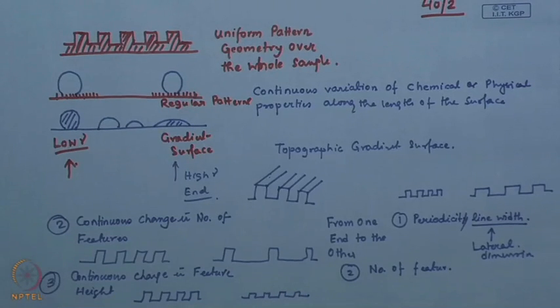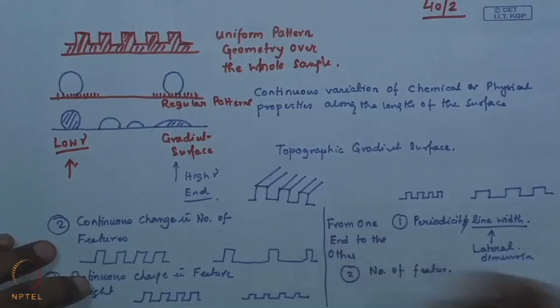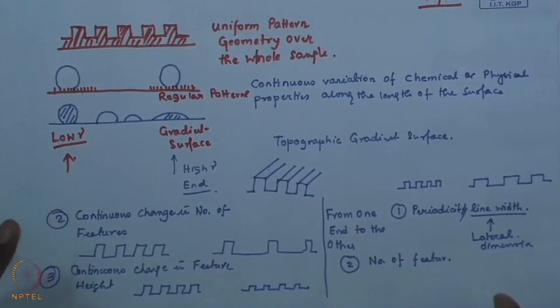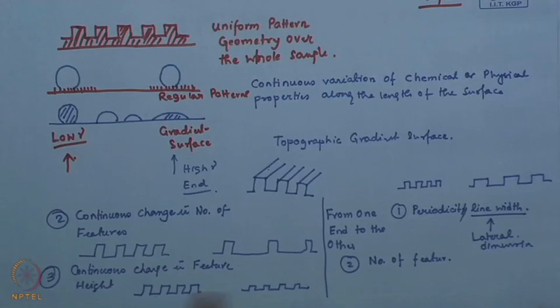These are all examples of a topographic gradient with a regular structure. In terms of a simple grating, you can have a continuous variation of periodicity, continuous variation of line width or lateral dimension, continuous variation of the number of features, continuous variation of feature height, or a combination of these from one side to the other. You can also have a topographic gradient with particles or other types of structures which may not be so regular. Let us look at some of the methods by which you can make these gradients.